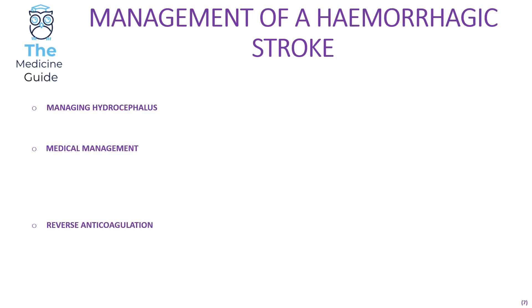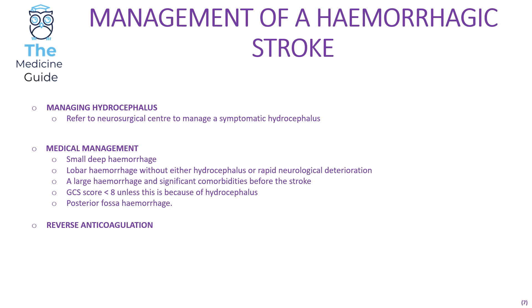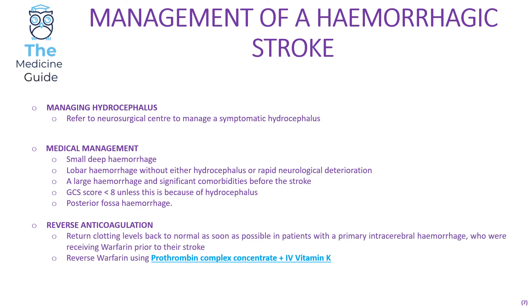For hemorrhagic stroke management, patients presenting with hydrocephalus need to be managed by the neurosurgical team. Medical management is offered for small deep hemorrhage, lobar hemorrhage without hydrocephalus or rapid neurological deterioration, large hemorrhage with significant pre-stroke comorbidities, GCS less than 8 due to hydrocephalus, or posterior fossa hemorrhage. Reversing anticoagulation is key — patients on warfarin prior to their stroke should have clotting levels returned to normal using prothrombin complex concentrate and IV vitamin K.